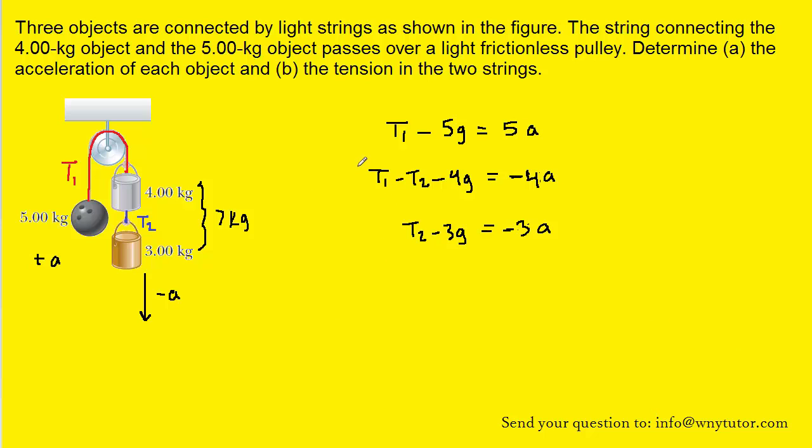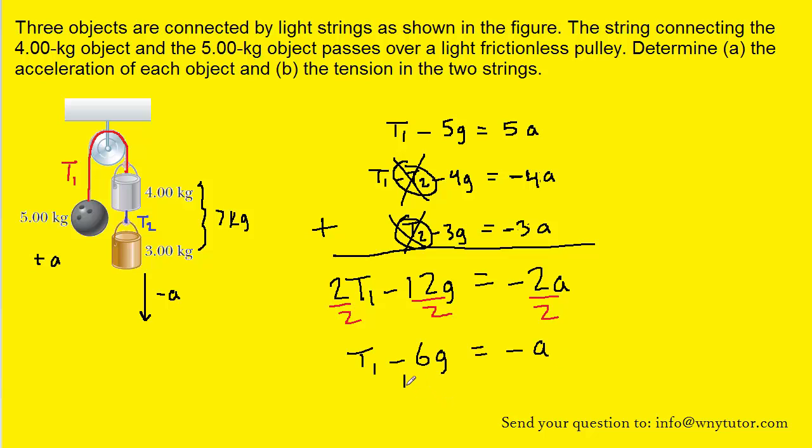Now one reason to stack the equations in this manner is because when we go to add the equations together, we can see that the t2 term, we have a negative t2 right here and a positive t2 right here, those would end up canceling out. The t1 and t1 would add up to 2 t1. The g's would add up to a minus 12g and then the acceleration terms are going to add up to a negative 2a. We could further simplify this equation by dividing each term in the equation by 2. And then finally we could add 6g over to the right side.